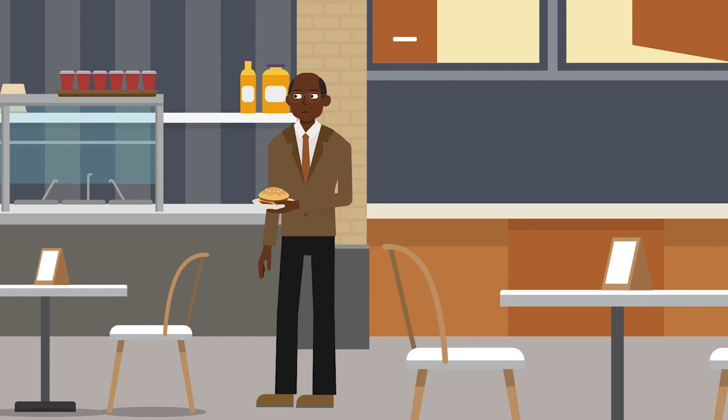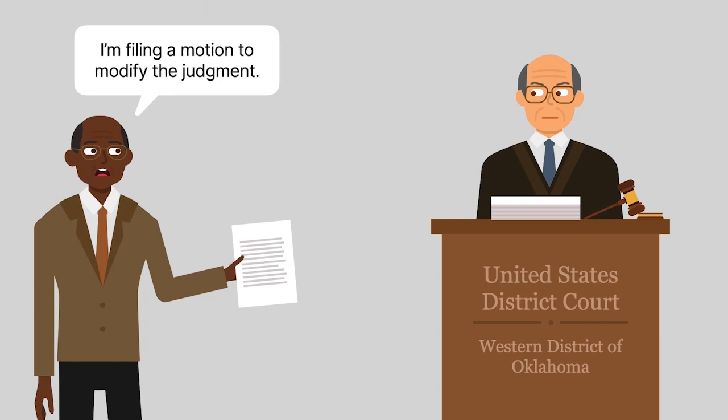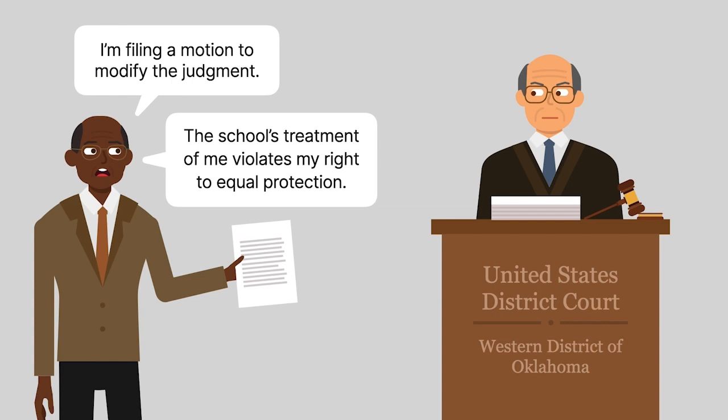McLaurin filed a motion to modify the district court's judgment, arguing that the school's treatment of him violated his right to equal protection. The court denied McLaurin's motion, and he appealed to the United States Supreme Court.